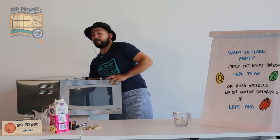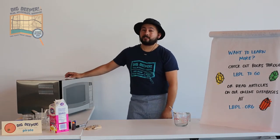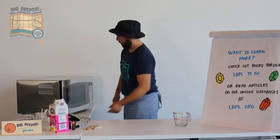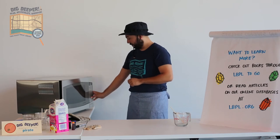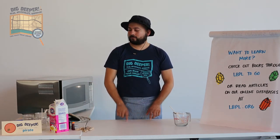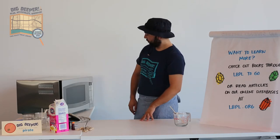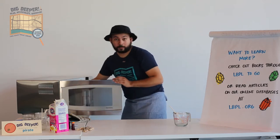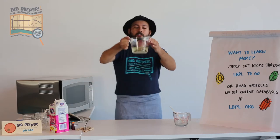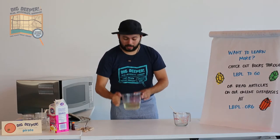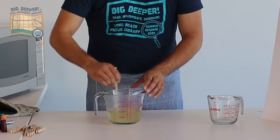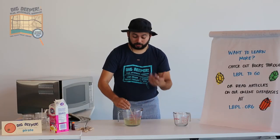It's probably best to get some help from an adult with this, just because the solution is going to start getting really, really hot and we wouldn't want you to burn yourself. So get some grown-up help. After two minutes, pull it out — be really careful because it's pretty hot. You can see that the sugar has begun to dissolve a little bit and the solution is more clear. Keep stirring gently to help it dissolve a little bit more. Stir nice and gently so you don't splash any hot solution on yourself.